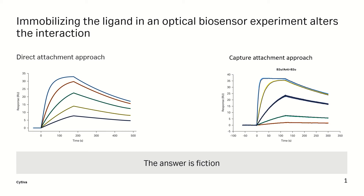Most biosensor chips have a dextran-based surface. The surface is a hydrogel that is free, not static. It's fluid-like and dynamic, resembling something like kelp on an ocean floor.